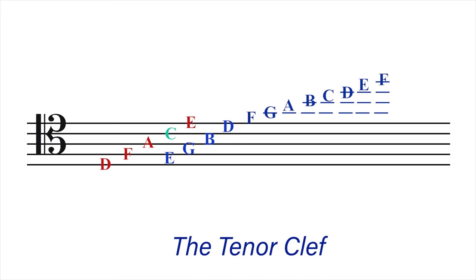Going to the ledger lines below the staff: D is the first line of the staff, so the space below the staff will become C, the first ledger line will be B, the space below the first ledger line will be A, the second ledger line is G, the space below the second ledger line is F, the third ledger line is E, the space below the third ledger line is D, and the fourth ledger line is C.